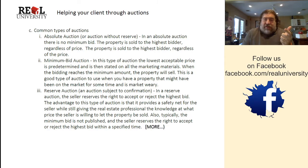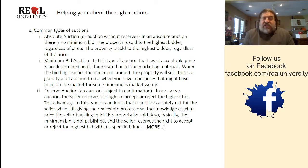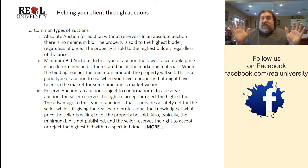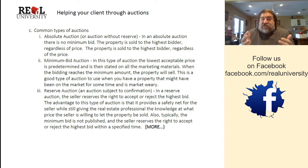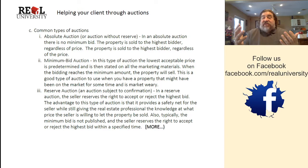As for the types of auctions — these are subcategories that can apply to each style. The absolute auction is probably buyers' favorite because there is technically no minimum bid. The property will be sold to the highest bidder regardless of price. In an absolute auction there is no reserve — if the highest bidder bids a thousand dollars, that's what the house goes for.